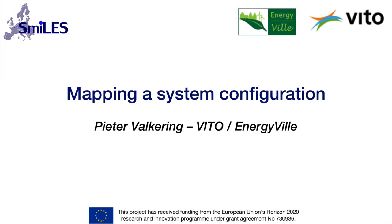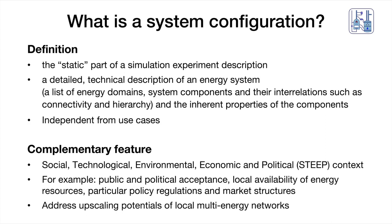I'll hand over to Peter Falgering from B2/EnergyBell, who will discuss how system configurations work in the PRECISE approach. A system configuration is the static parts of a simulation experiment description — a detailed technical description of an energy system including a list of energy domains such as electricity and heat, system components, interrelations such as connectivity and hierarchy, and the inherent properties of the components. Importantly, system configurations are independent from use cases — multiple use cases can be run on a single system configuration.